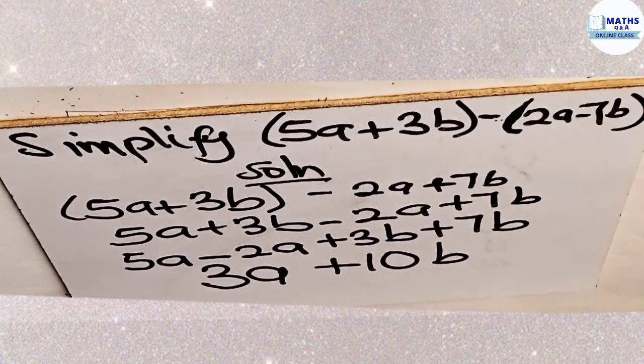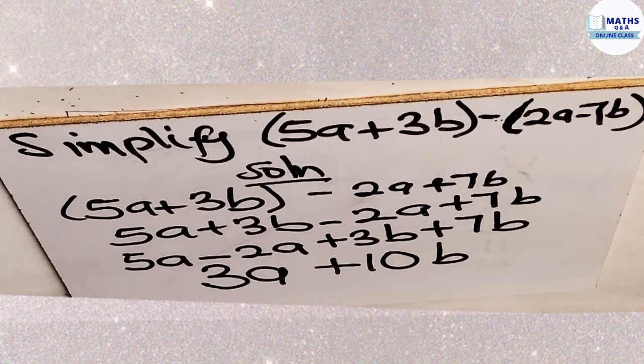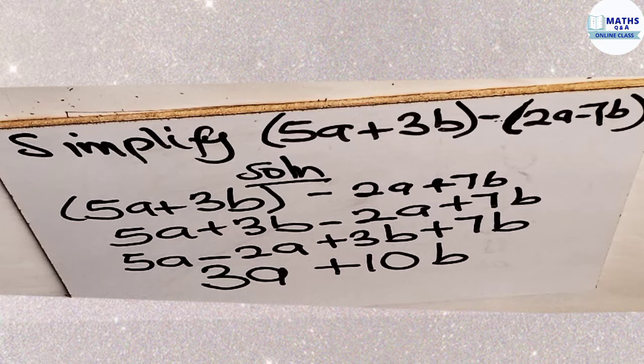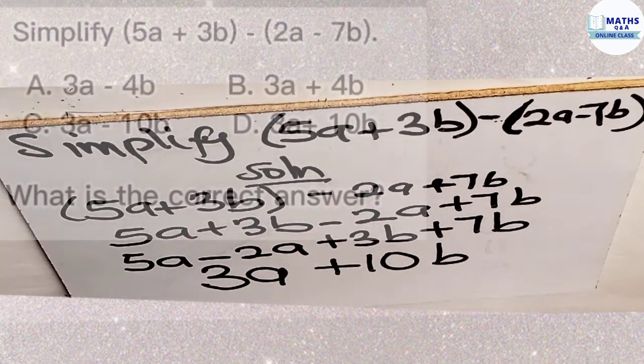So this is the result that we get when we simplify 5a plus 3b minus 2a minus 7b in a bracket. What is the answer? 3a plus 10b.